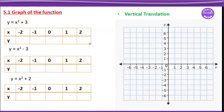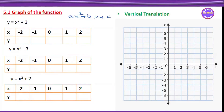This is the graph of the function. The quadratic function is ax squared plus bx plus c. This is the quadratic function. In the quadratic function, ABC is the standard form.